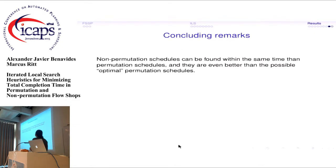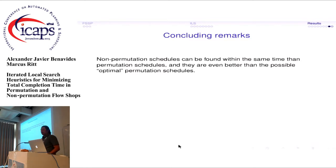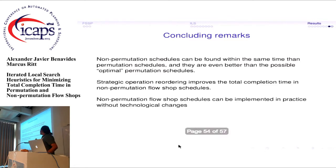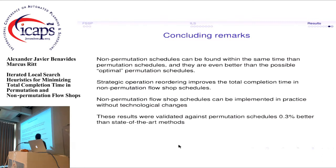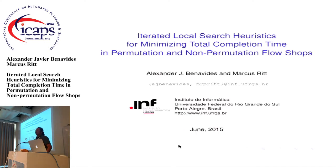In conclusion: non-permutation schedules can be found within the same time as permutation schedules and are much better — possibly achieving optimal values. Strategic operation reordering improves total completion time in non-permutation flow-shop schedules, and these schedules can be implemented in the plant without technological changes. These results were validated against permutation schedule heuristics that are themselves better than the state of the art. Thank you.